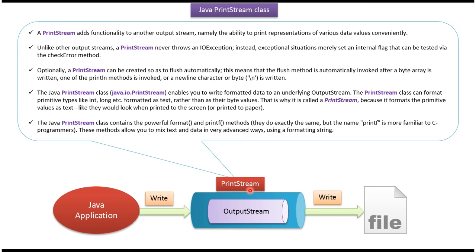PrintStream can format primitive data types as text. To format primitive data types as text, it has two powerful methods: one is format, and another one is printf.